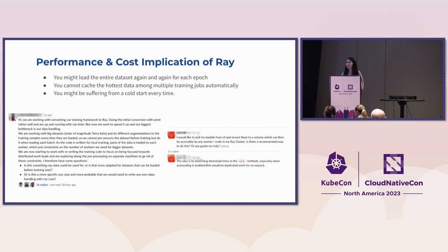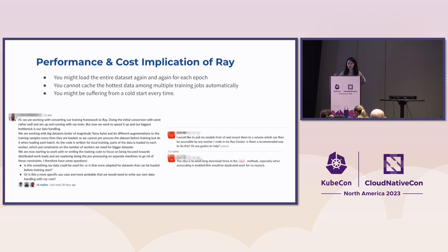Some users have multiple Ray pipelines, or have teams using PyTorch and TensorFlow alongside Ray, but they share the same hot data within a company. How can we cache the hottest data for multiple jobs together? Some users also want their models stored in a shared volume accessible by all Ray nodes. Users don't want to suffer a cold start every time, and don't want to re-download and re-process data.